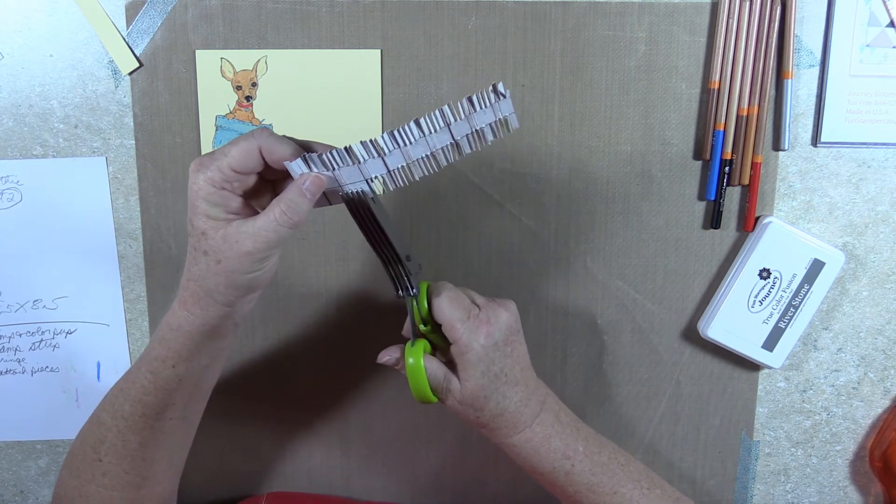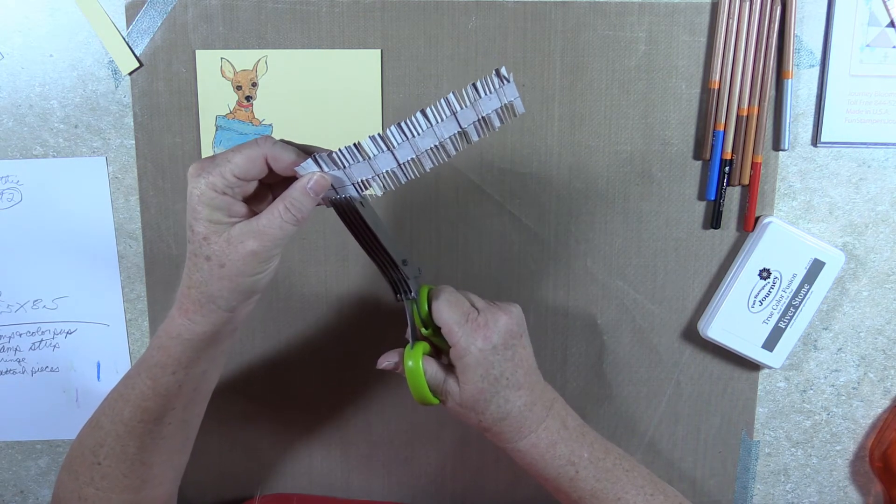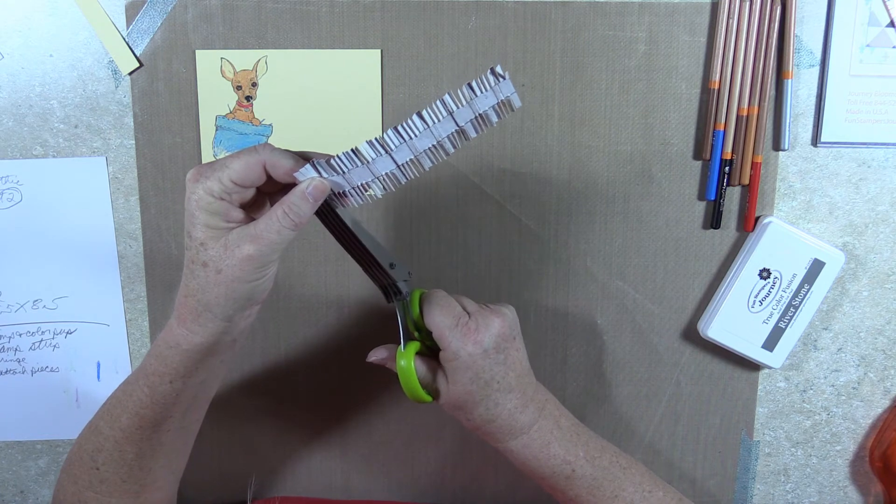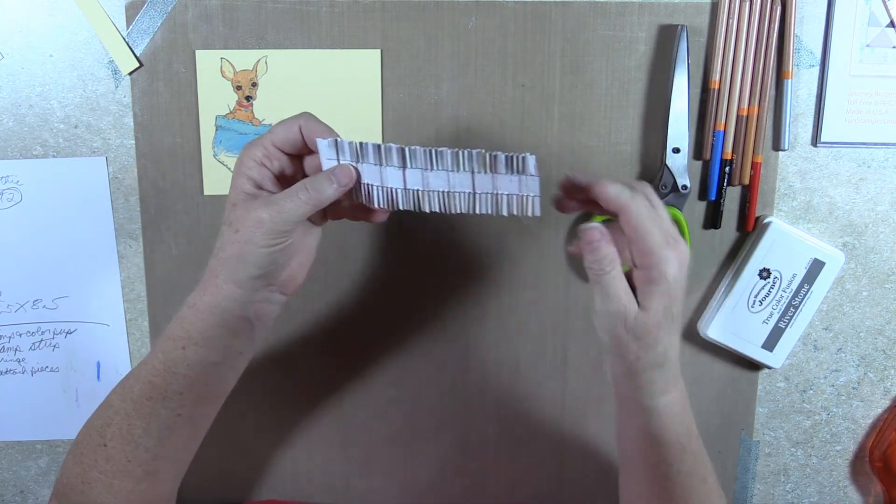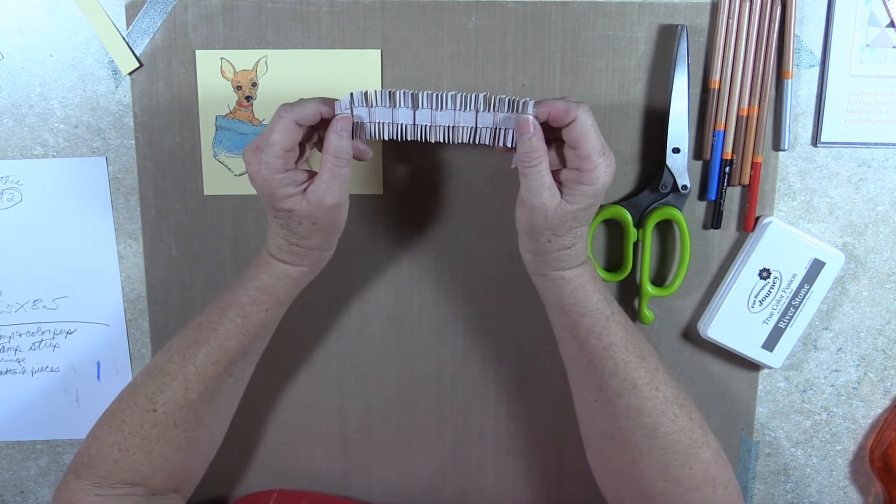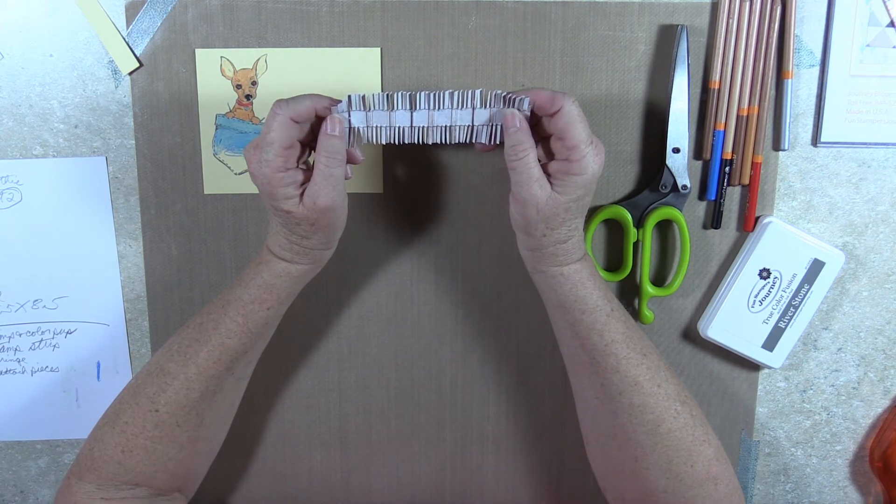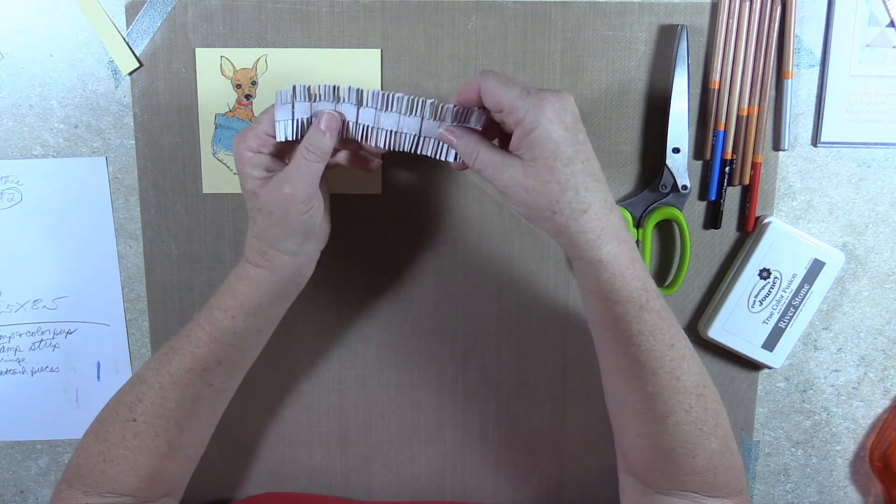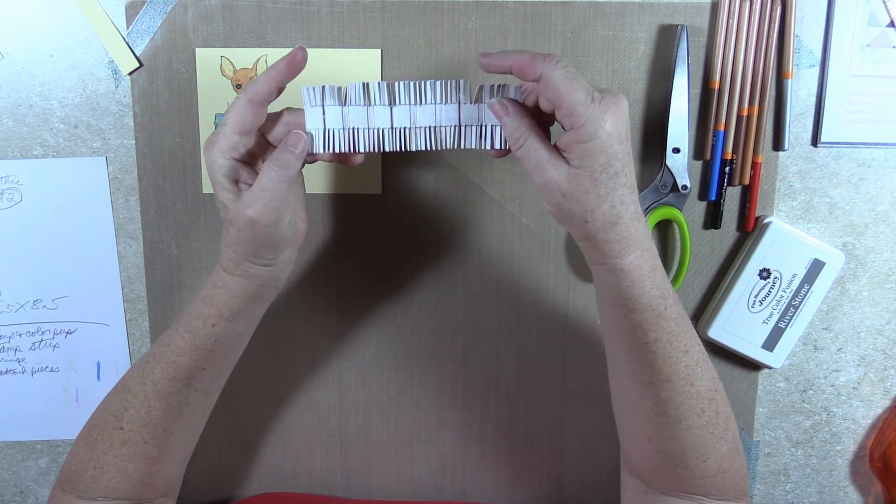The fringe scissors are good for all kinds of embellishments. Grass, of course, if you're doing something that you need grass. Something on the bottom of a skirt, something that looks like party decorations on your card. This is just a plain embellishment, and I just love them.